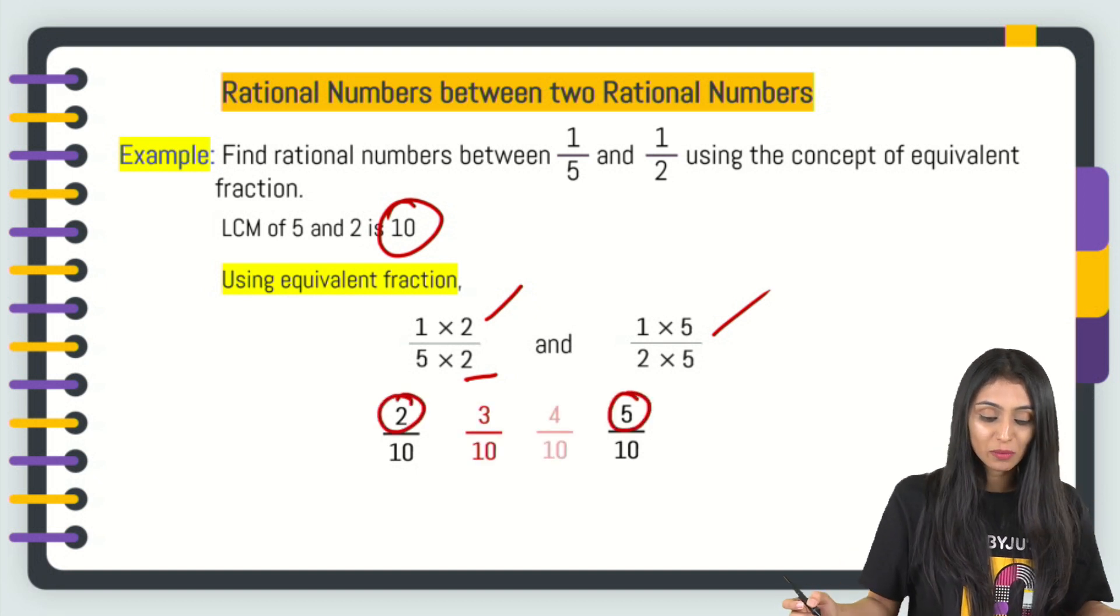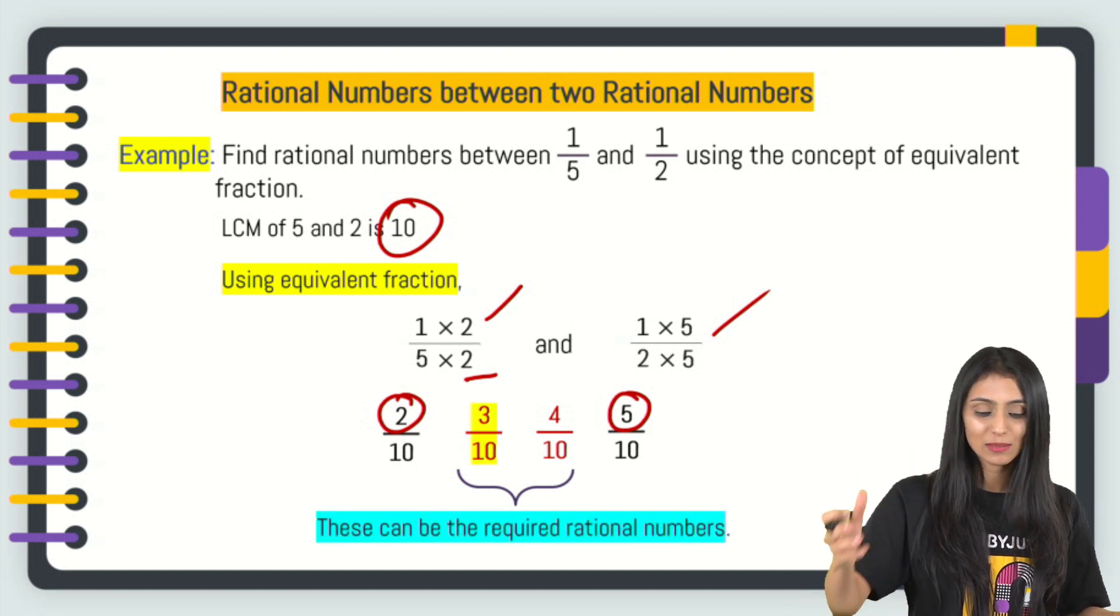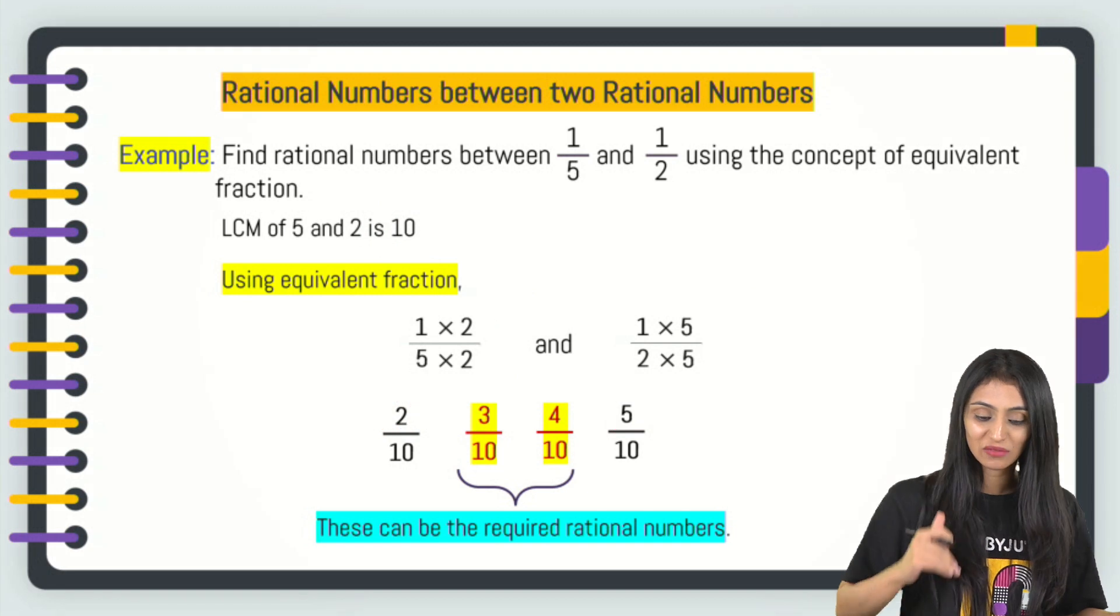Now, denominator is same. Between 2 and 5, I've got 3 by 10, 4 by 10. I can say that these can be the required rational numbers. This is the concept of equivalent fractions that we used in the previous slide also.